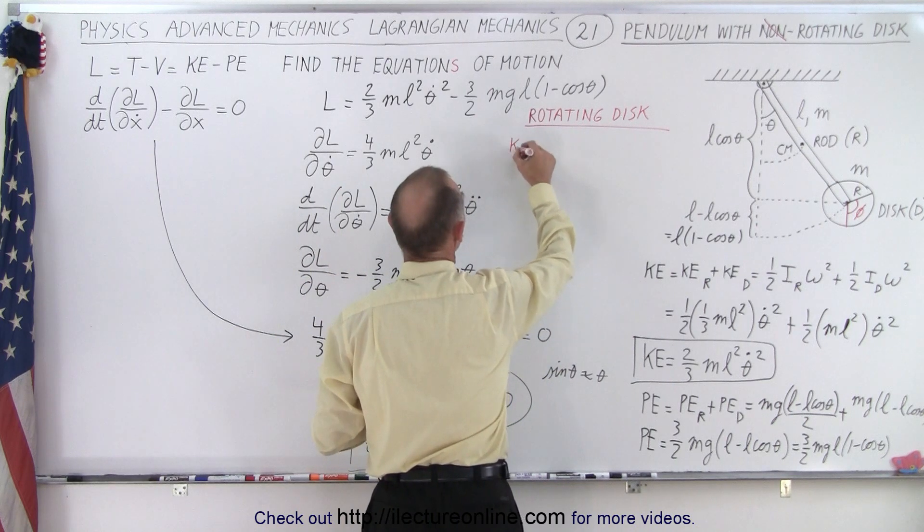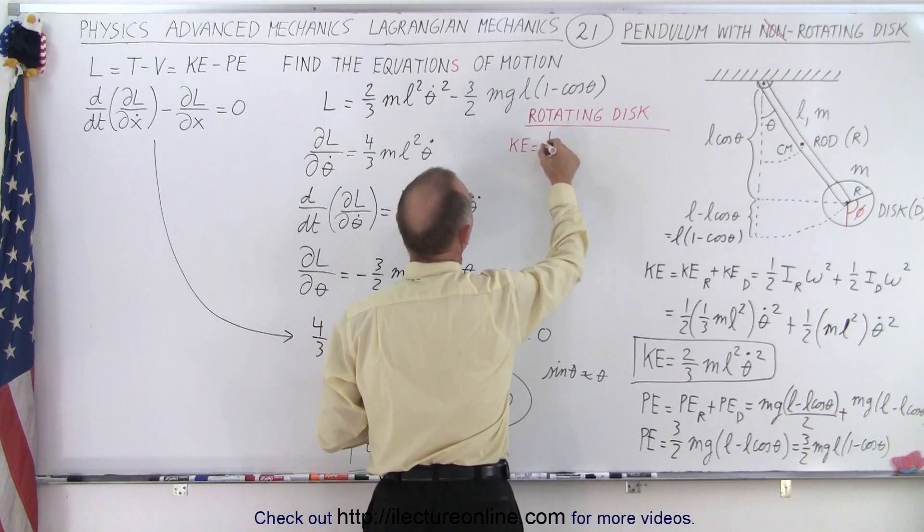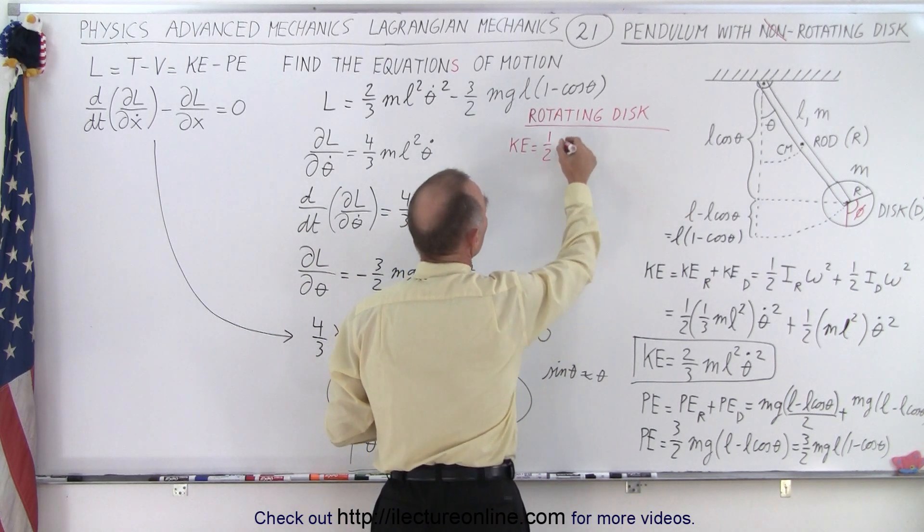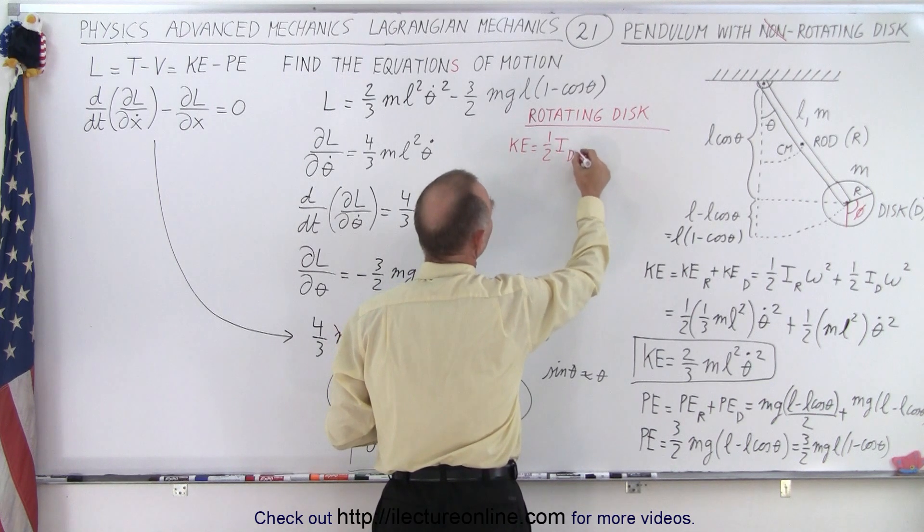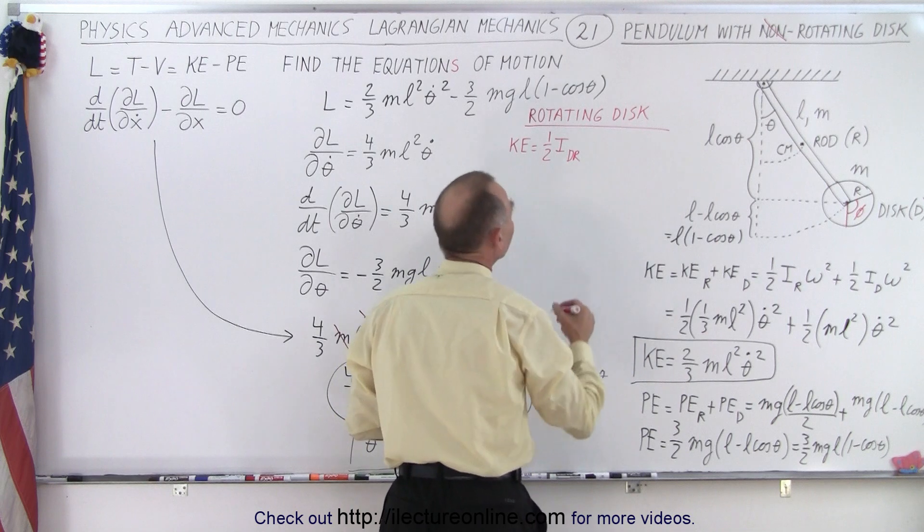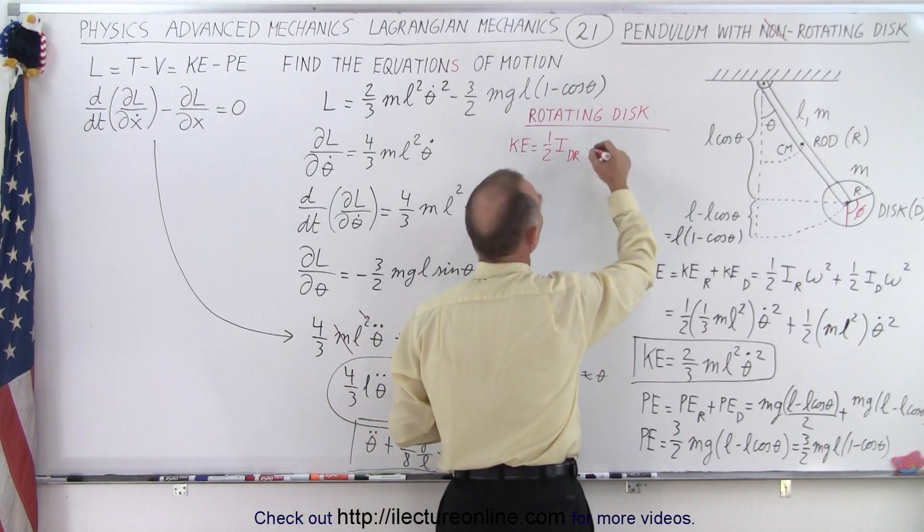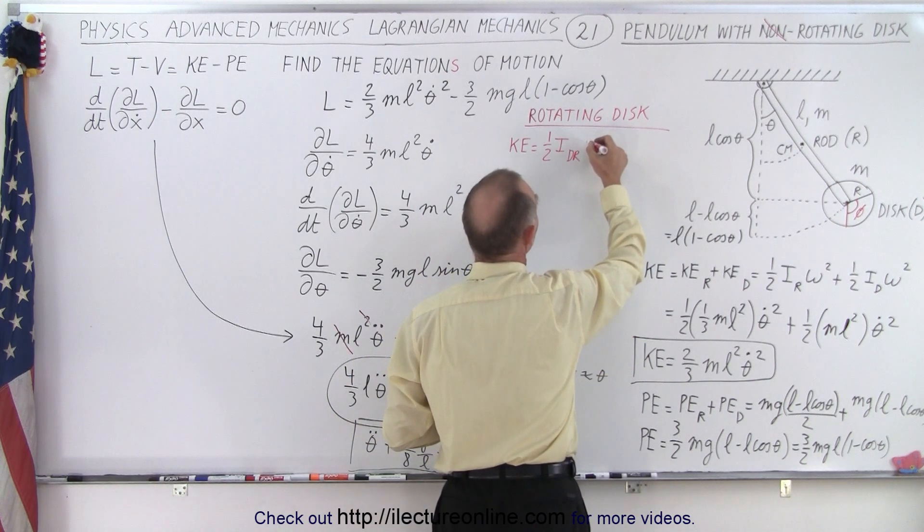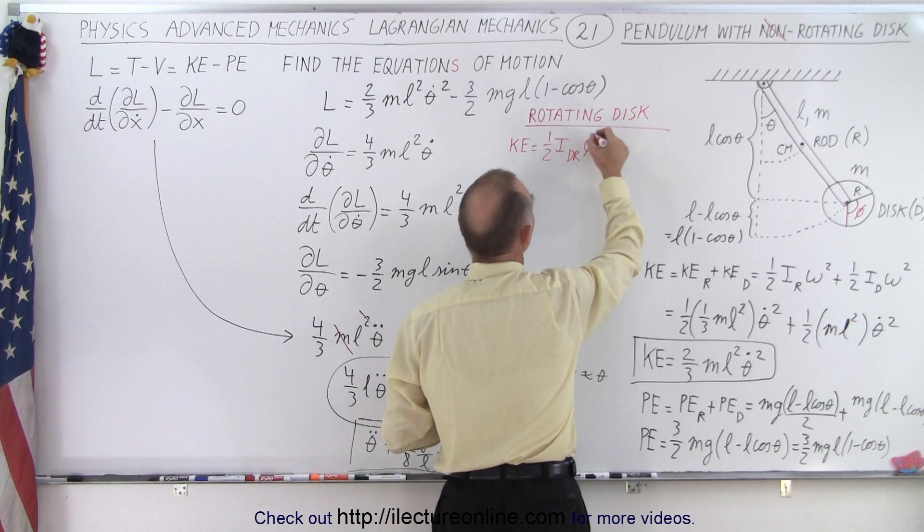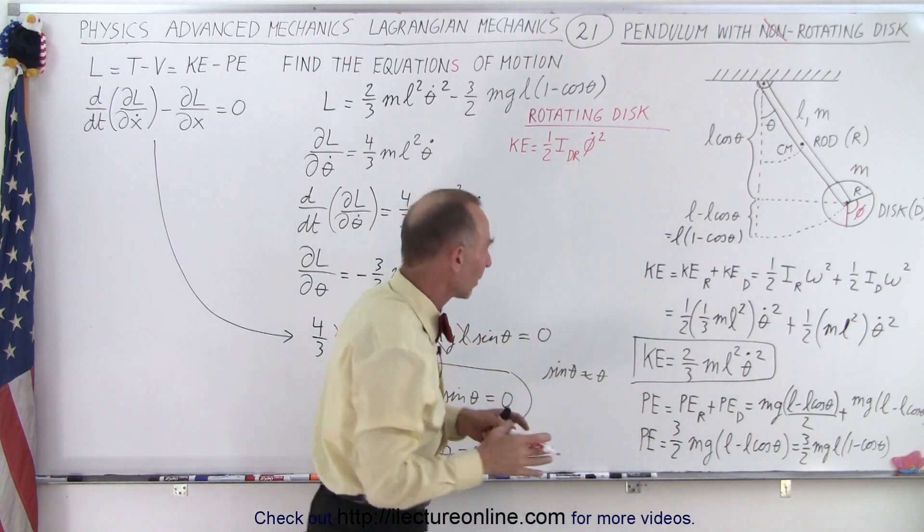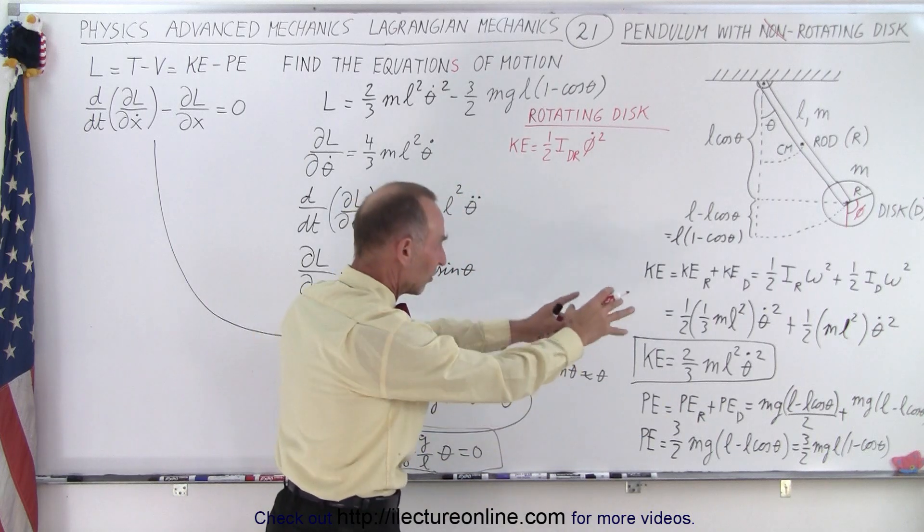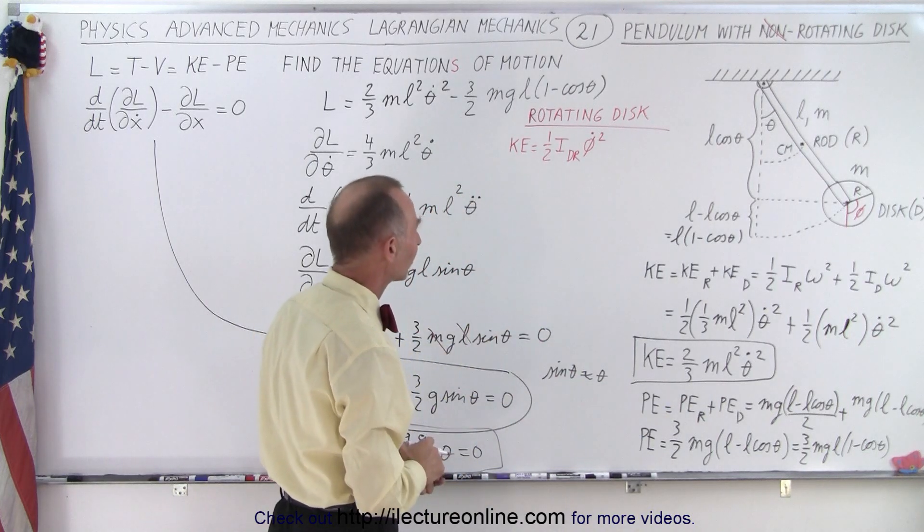And so for the rotating disc, the kinetic energy is going to be one half the moment of inertia of the rotating disc, so I'll write as dr for rotating disc, times its rotation. So that would be, I'm going to write as phi dot squared, because otherwise I'll write omega and you might confuse that with the same omega there, and it's not, of course.